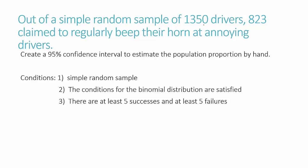Finally, we are asked: are there at least 5 successes and 5 failures? Certainly — there are 823 successes, and if we take the total minus 823, certainly more than 5 failures. This last condition, if met, allows us to use the normal distribution to approximate the binomial curve. We need this last condition to be met if we're going to do the problem by hand.